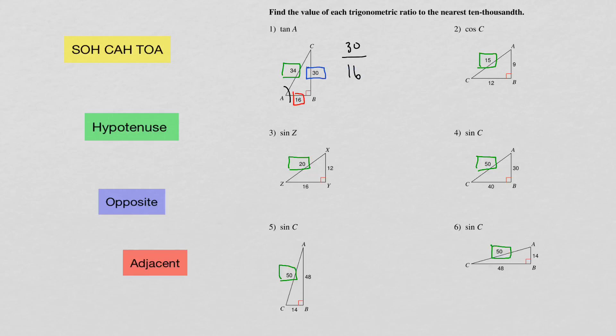Number two, we're looking for the cosine of C. Here's angle C. Cosine is adjacent over hypotenuse. Here's your adjacent side, so adjacent over hypotenuse gives us 12 over 15. Number three, sine of Z. Here's Z — sine is opposite over hypotenuse. Here's your opposite side, so opposite over hypotenuse gives us 12 over 20.